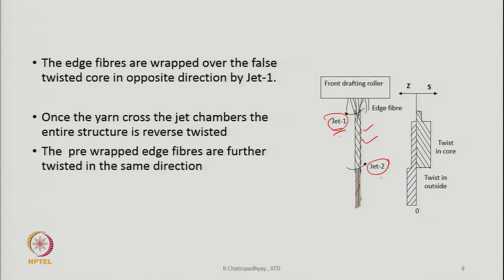To enhance strength, Z1 exists to pre-wrap the edge fibers around the core in the opposite direction. Once the yarn moves out of the Z2 chamber, all core fibers become parallel because the core loses its false twist. But because the entire core is rotating in the opposite direction and losing twist, it causes the pre-wrapped edge fibers to be wrapped much more tightly — they receive more twisting torque and wrap tightly around the core part of the yarn.